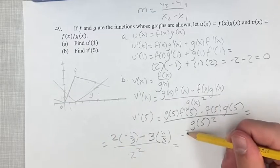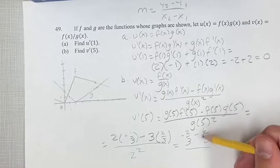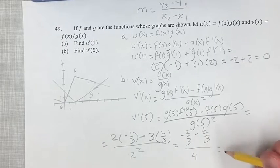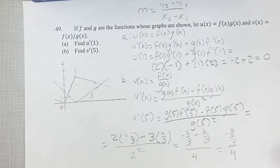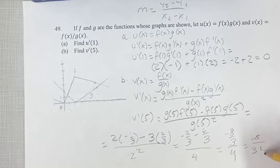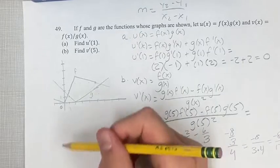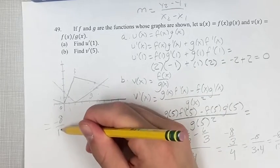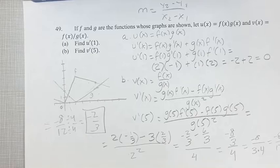Plugging in: 2 times negative 1/3 is negative 2/3, minus 3 times 2/3 which is 6/3. Combining the numerator: negative 2/3 minus 6/3 is negative 8/3, all divided by 4. Dividing by 4 means the denominator becomes 3 times 4, or 12, giving negative 8 over 12, which simplifies to negative 2 over 3.